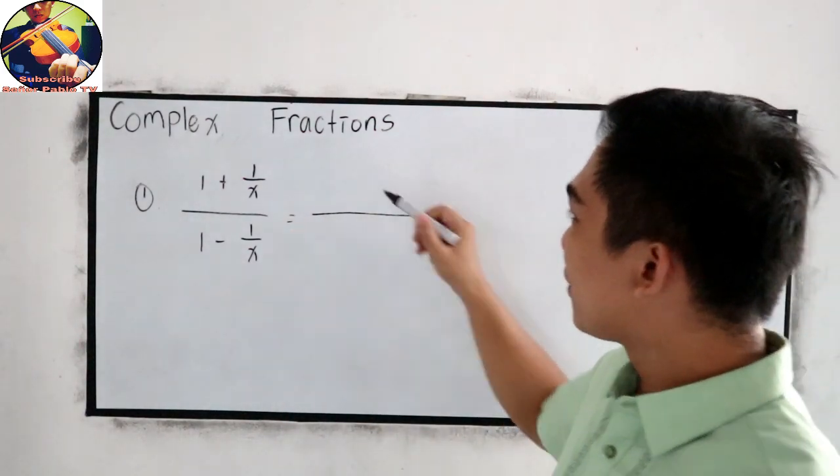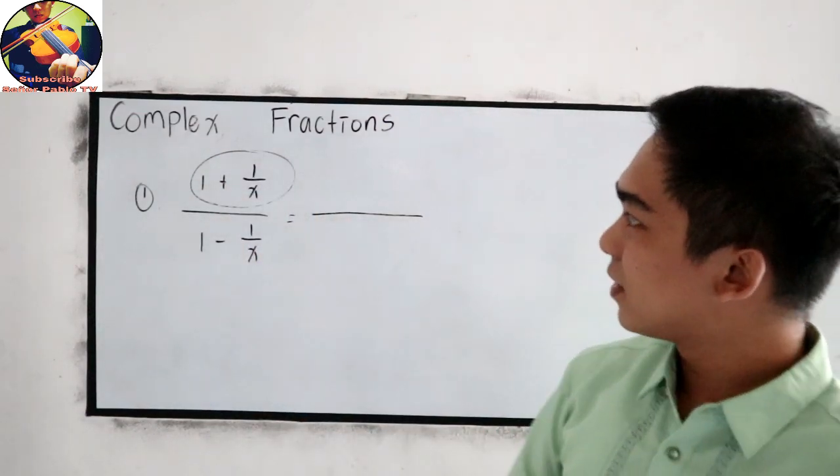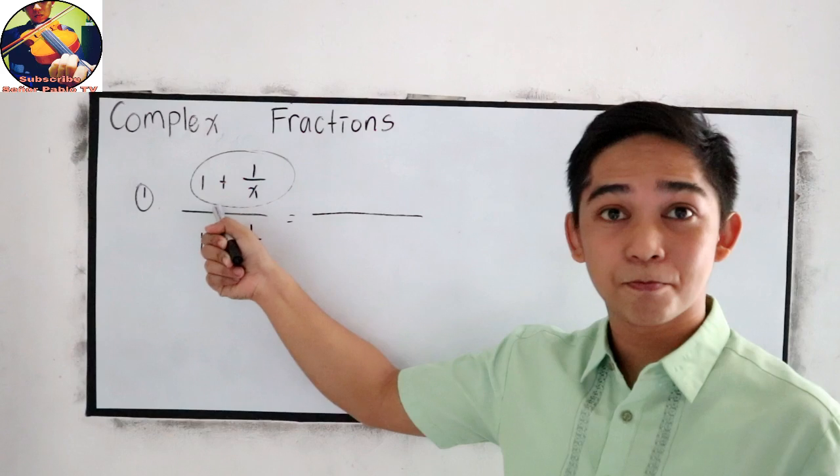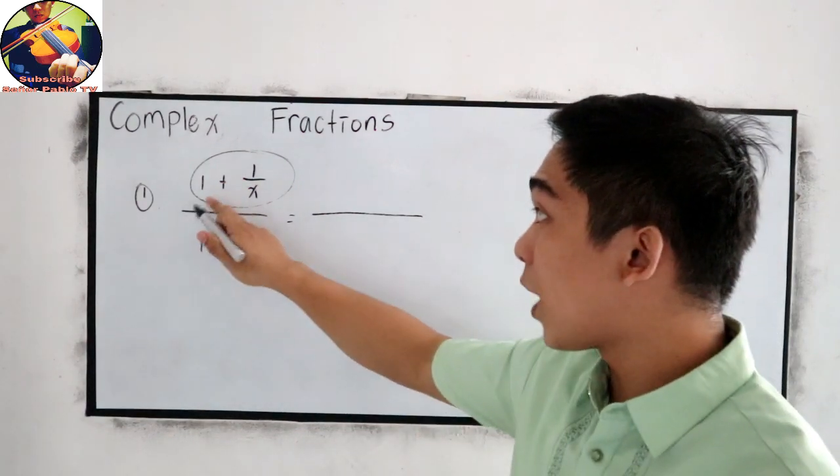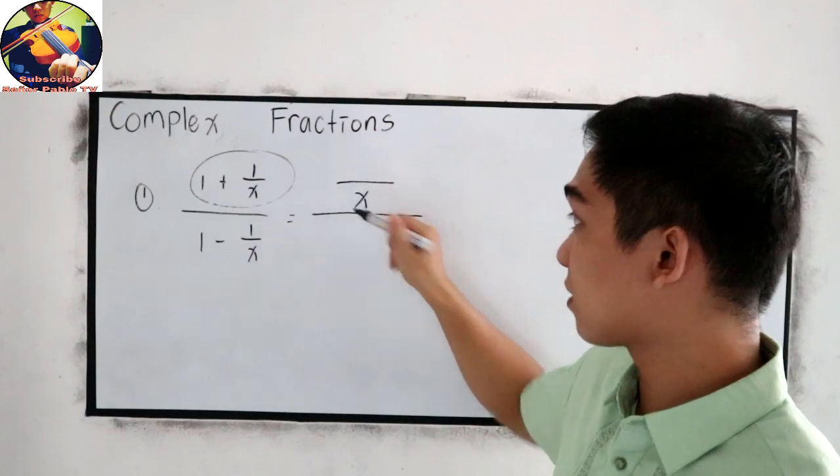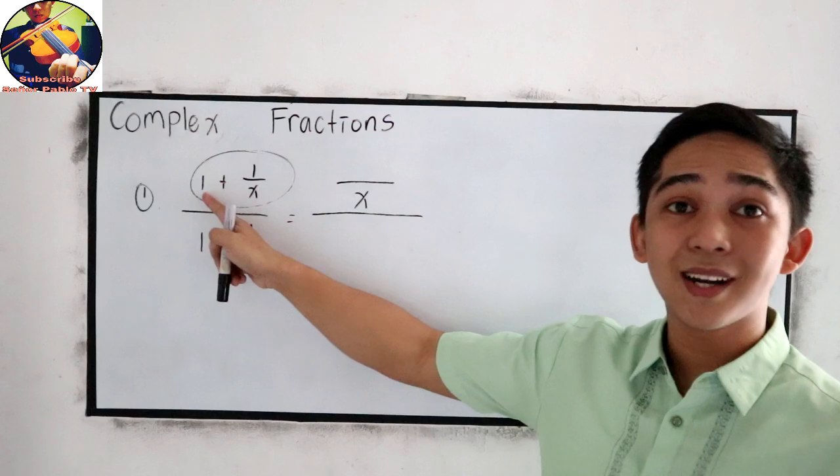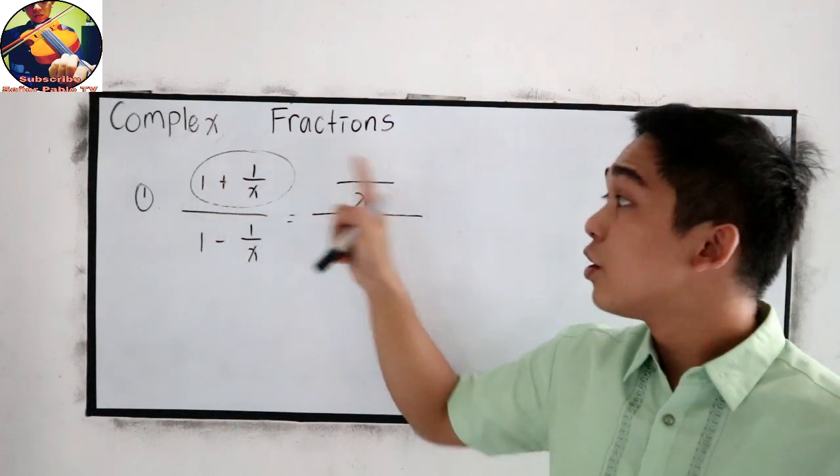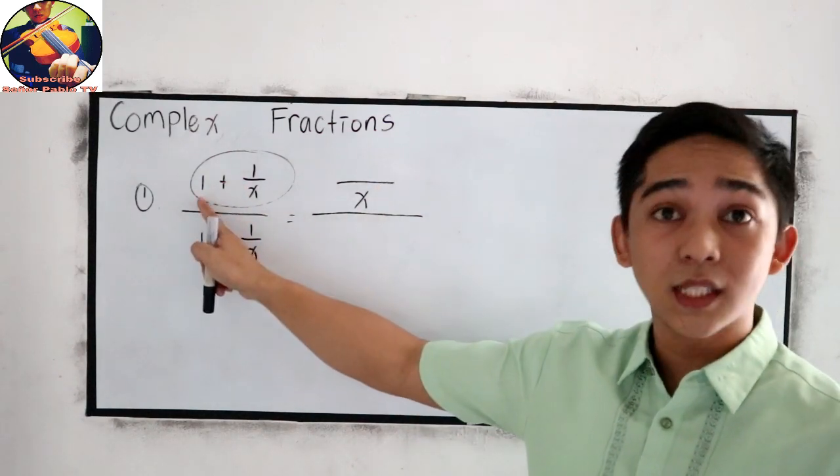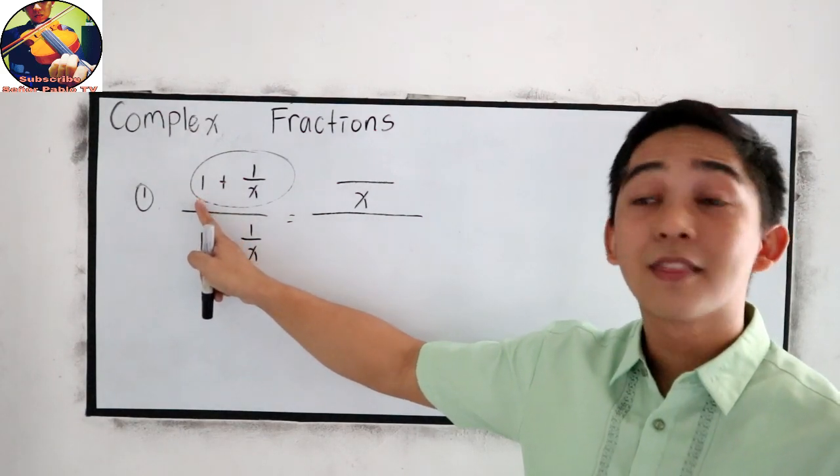Okay, so for our numerator, this will be our numerator. Let us first simplify this expression. 1 plus 1 over x. So get the LCD, which is x. We know that the whole number has a denominator of 1. So x divided by 1, that is x, times 1.